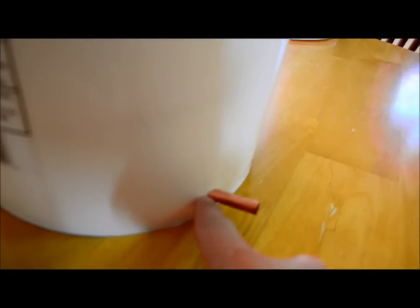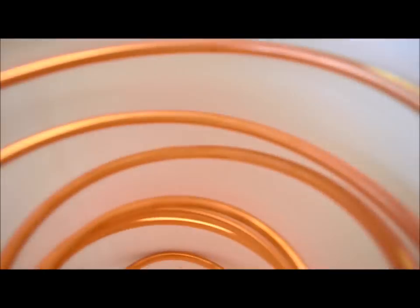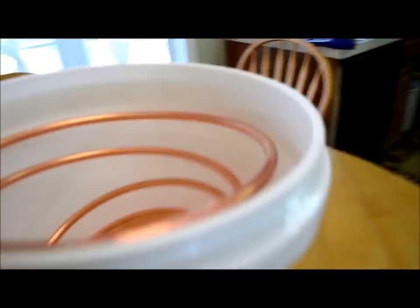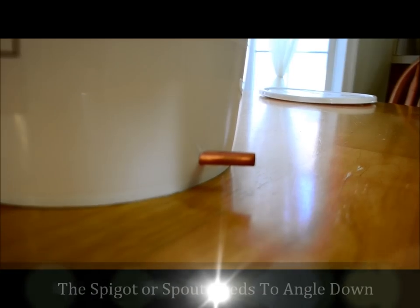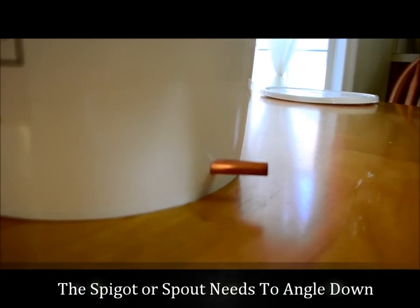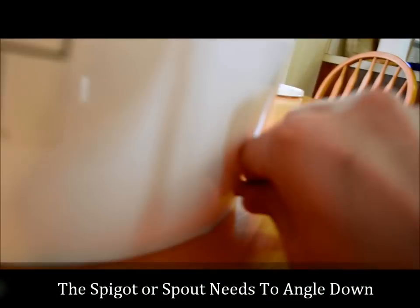The only thing left to do on this worm box is to take your silicone and liberally apply it around here and on the inside. And one final thing you want to make sure of is you can see how this thing is slightly bent up right now.